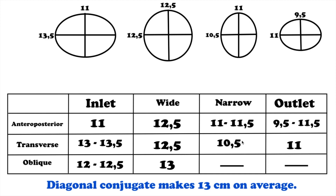Let's repeat the pelvic dimensions at different levels. Area of brim: straight dimension 11 cm, transversal dimension 13 cm, oblique dimensions 12 to 12.5 cm. Pelvic plane of greatest dimensions: straight dimension 12.5 cm, transversal dimension 12.5 cm, oblique dimension conditionally 13 cm. Third parallel pelvic plane: straight dimension 11 cm, transversal dimension 10.5 cm. Area of pelvic outlet: straight dimension 9.5 cm, transversal dimension 11 cm. Diagonal conjugate equals 13 cm.